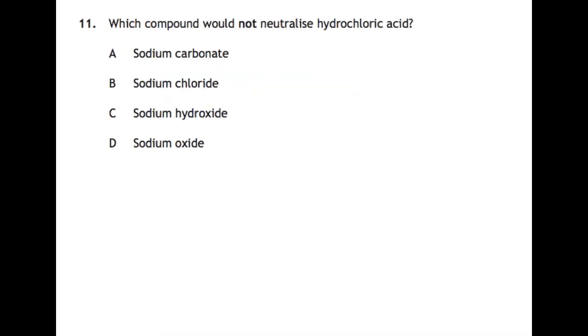Question eleven: which compound would not neutralise hydrochloric acid? Things which neutralise acids are bases. So a base can be a carbonate, hydroxide, or an oxide. They would all neutralise your acid. So the answer that you're looking for is B, sodium chloride. That's a salt, it's not a base.